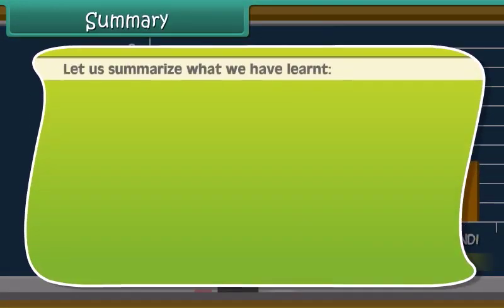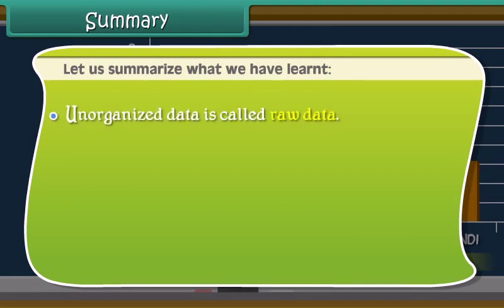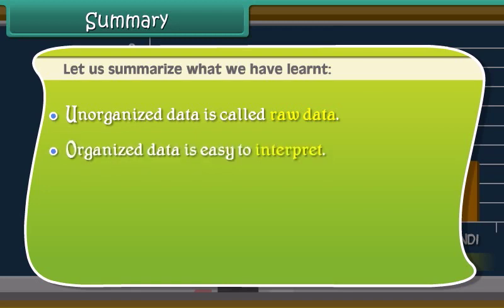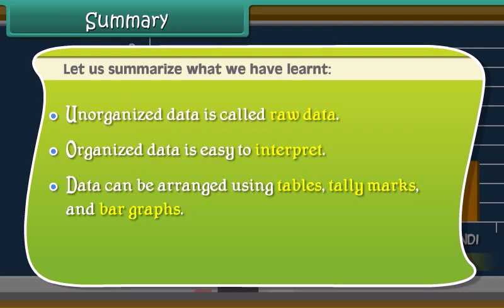Let us summarize what we have learnt. Unorganized data is called raw data. Organized data is easy to interpret. Data can be arranged using tables, tally marks and bar graphs.